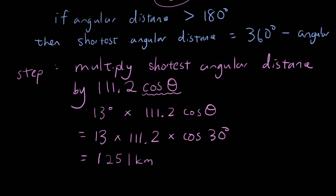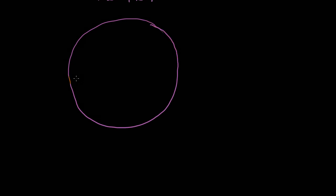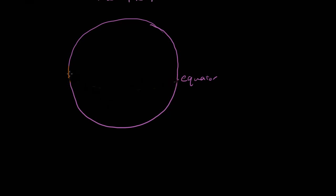Let's talk about where the cos 30 comes from — though if you have no interest you can skip to the next video. Here is a side view of the Earth with the equator as a horizontal straight line. A small circle would be somewhere above the equator. A small circle of 30 degrees north means the angle between the edge and the center of the Earth is 30 degrees.